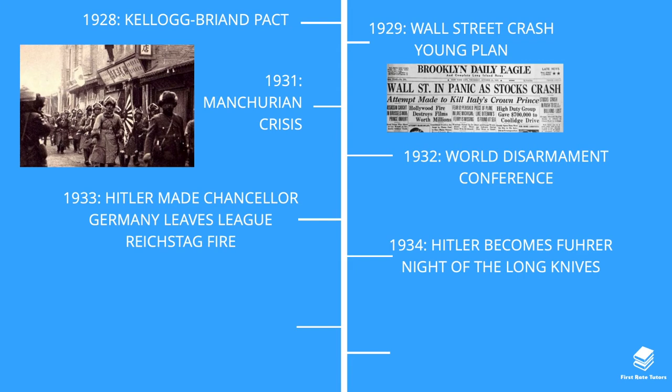In 1934 Hitler secured his hold further in Germany — he became Führer, outlawed all other political parties, and Germany became a one-party state. He also managed to eliminate threats within the Nazi party in what was known as the Night of the Long Knives, during which key Nazi leaders such as Ernst Röhm were killed.